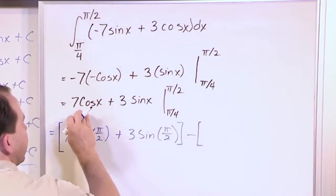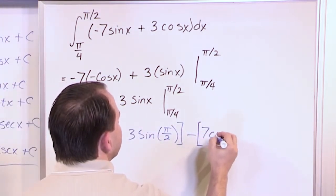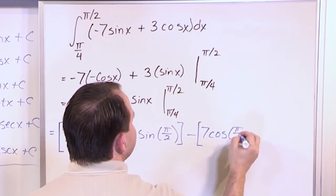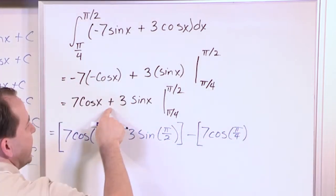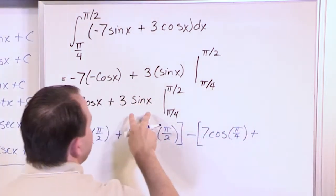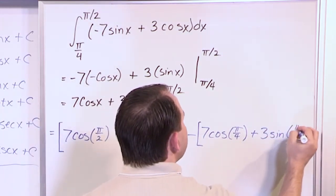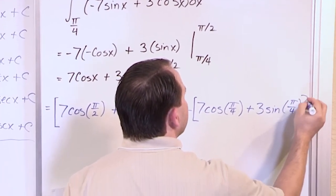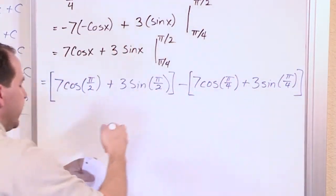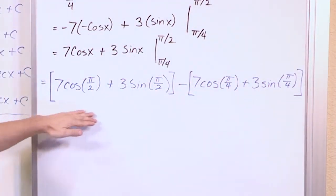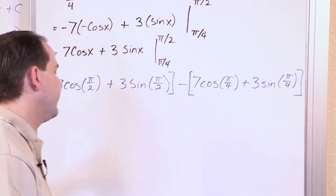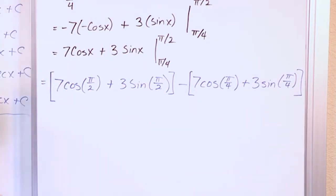So this is evaluating the function at the top limit of integration. So now we're going to evaluate the function at the bottom limit: 7 cosine of pi by 4 plus, from this sign right here, 3 times the sine of pi over 4. So we have bracket minus bracket. So it's clear at a glance that this is the top limit of integration, and this is the bottom limit of integration.